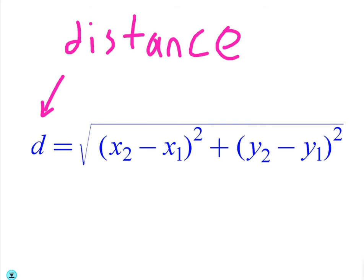One other thing before we do examples: just like with slope where you could do Y2 minus Y1 over X2 or Y1 minus Y2 over X1 minus X2, you can do the same with the distance formula. You can put the Y1s and X1s first — it won't matter because you're squaring it, so it'll become positive anyway. Just write it like this and it'll work every time.